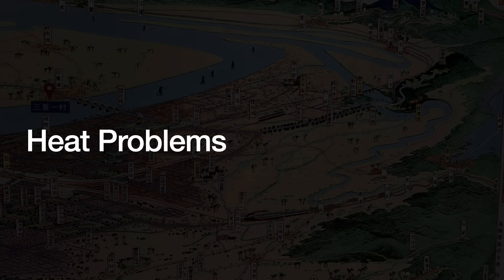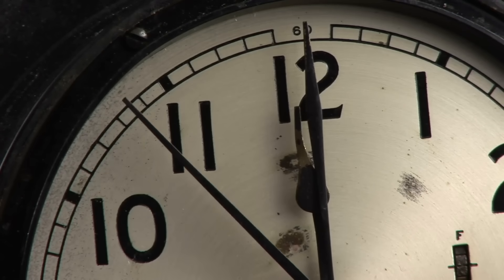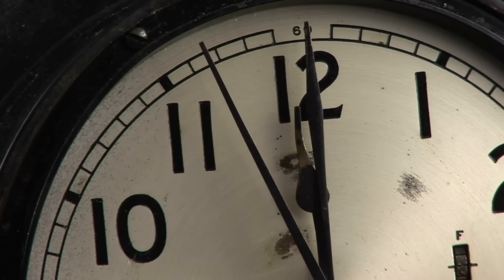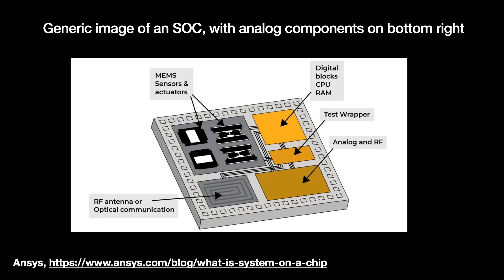Heat is a bad thing for the chip. First, thermal problems can cause delays in how transistors receive signals, leading to what we call timing failures. Simulations imply clock timings can be skewed by as much as 10% for every 40 degrees Celsius rise. Second, heat interferes with the IC's analog circuit components. Since these parts interact with the real world, they are affected by real world conditions, and big temperature differences in the die can interfere with signal levels, causing inaccurate performance.